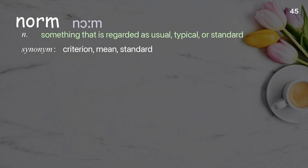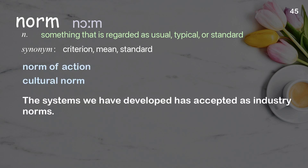Norm: something that is regarded as usual, typical, or standard. Examples: norm of action; cultural norm. The systems we have developed have been accepted as industry norms.